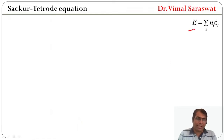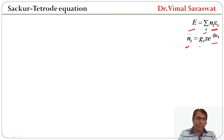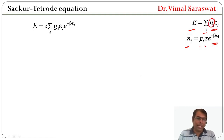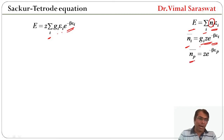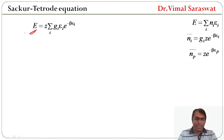Since total energy equals sigma_i n_i * e_i, and n_i bar equals g_i * z * e^(-beta * e_i), substituting gives E equals z * sigma_i g_i * e_i * e^(-beta * e_i). Also, n_p bar equals z * e^(-beta * e_p), so writing E in terms of p gives E equals z * sigma_p e_p * e^(-beta * e_p).